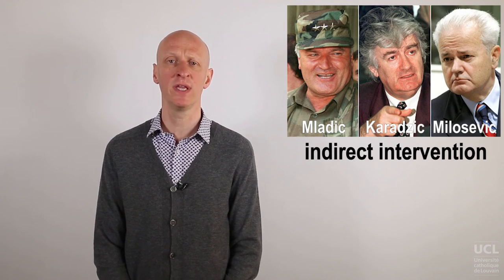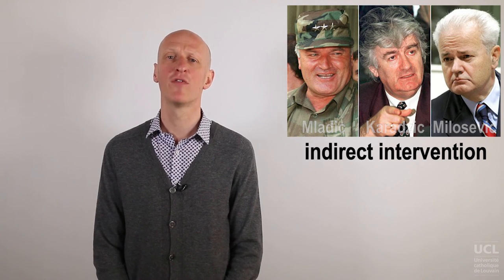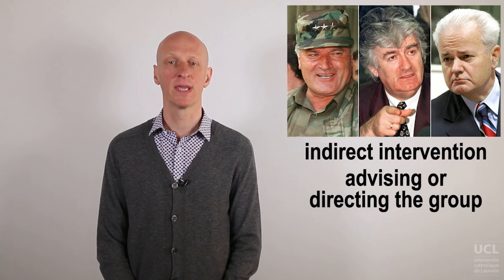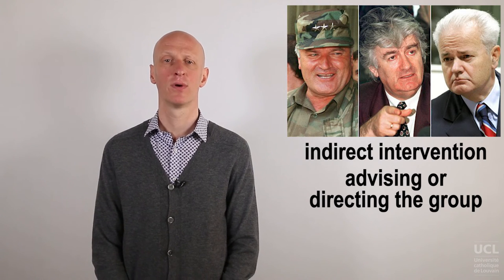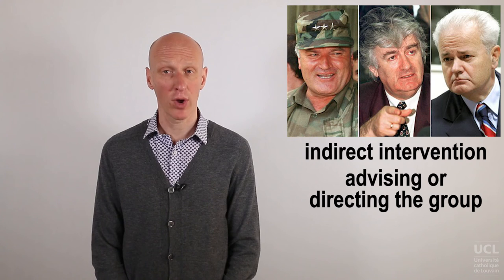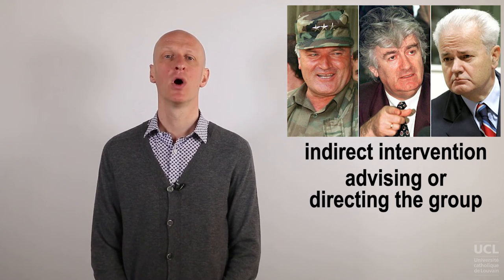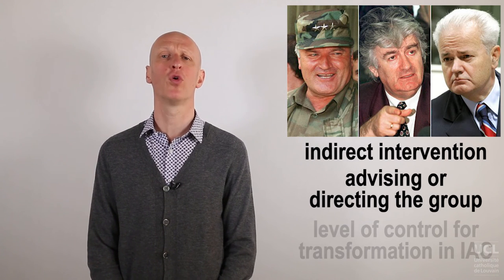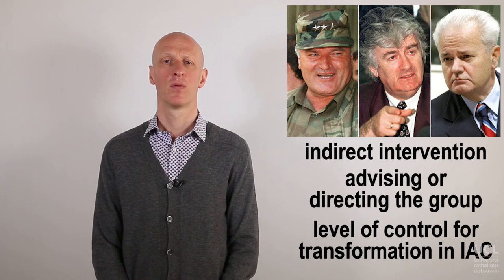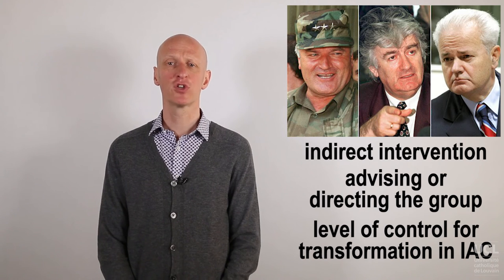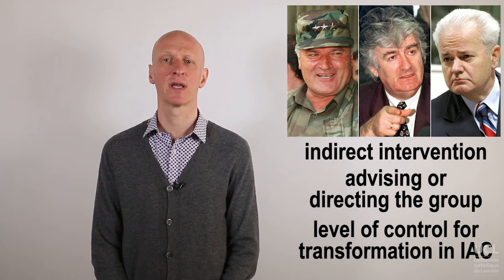Let's now say a few words about the notion of indirect intervention. States or organizations can intervene on the side of an organized armed group — not by introducing their armed forces or accomplishing an act of war — but through advising or directing the group in cases where it is fighting against the national government. It is commonly accepted that when armed groups fighting against the national government act on behalf of another state or organization, there will be an international armed conflict. However, many controversies have occurred over the required level of control for the conflict to be transformed in this manner.